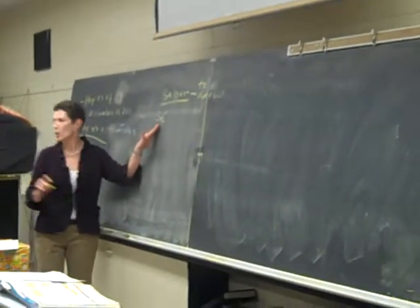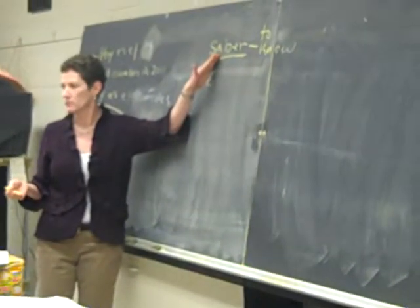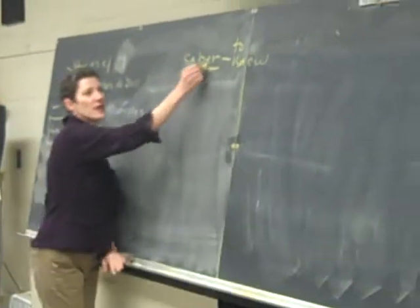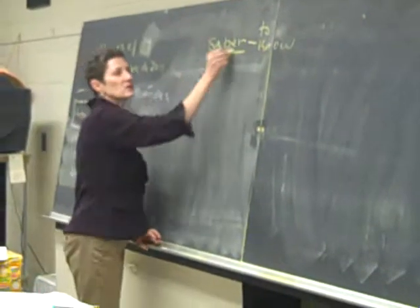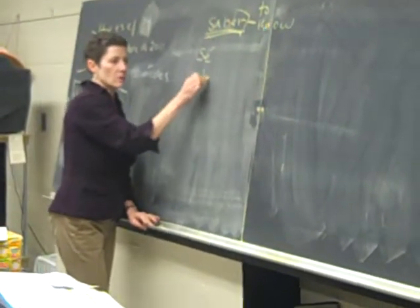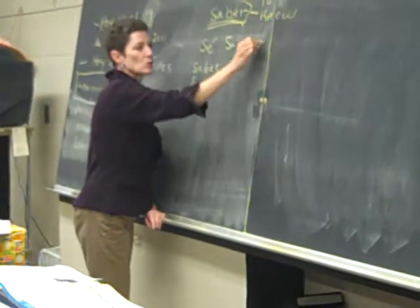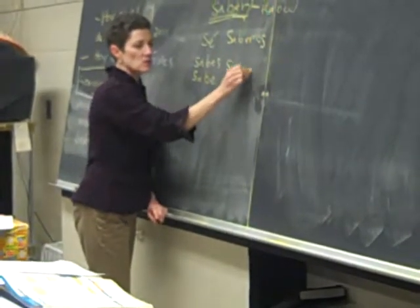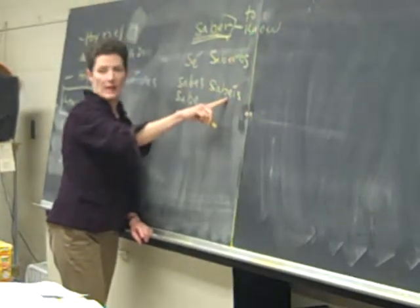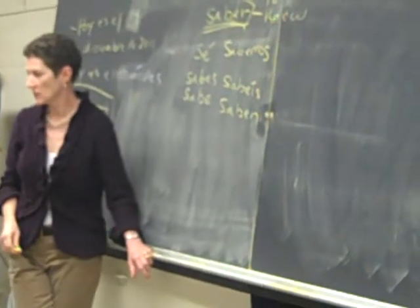La primera persona irregular no tiene nada que ver con el verbo. So it doesn't have anything to do with the verb. As in, it doesn't take the root, right? But the rest of it does. You drop your ER off and you write, sé, sabes, sabe, sabemos, sabéis. Si tiene acento sobre le, saben. Okay? Easy.